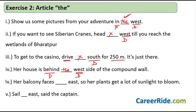'Her balcony faces ___ east, so her plants get a lot of sunlight.' Answer: no 'the' — no preposition before the direction. 'Sail ___ east, said the captain.' Answer: no 'the' — no preposition present. These concepts are straightforward once you know the rule. These videos will be of tremendous use in your placement tests and entrance exams to help you crack the verbal ability section.